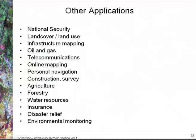Other types of applications that remote sensing is used in include national security and intelligence, land cover and land use, infrastructure mapping, oil and gas industry, telecommunications, various online mapping — so Google Earth, Google Maps and that sort of thing is based on remote sensing data — personal navigation systems, construction survey, agriculture, forestry, water resources, insurance, disaster relief, and of course environmental monitoring.